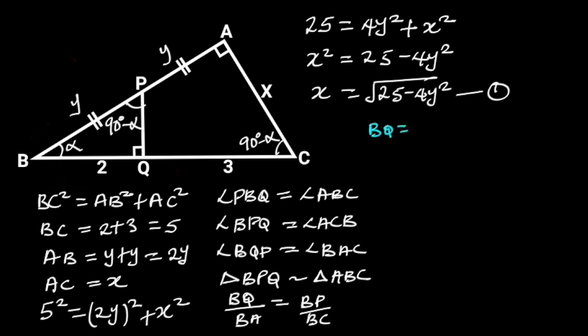BQ is equal to 2. BA is equal to Y plus Y, which is equal to 2Y. BP is equal to Y. And BC is equal to 2 plus 3, which is equal to 5. Substituting these values in the above equation will give us 2 over 2Y is equal to Y over 5.